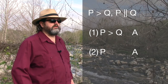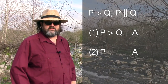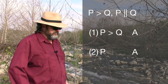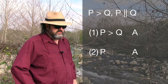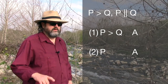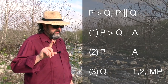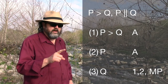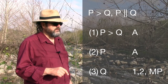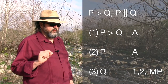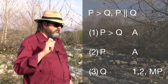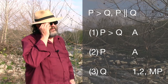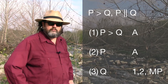The next step is inferring q from our first two premises, and this brings us to rule 13. Rule 13 says that in our citation we first provide the line numbers from which we made that inference — in this case, one comma two comma — then a space, and then the rule we're using. In this case it's modus ponens, which we abbreviate as MP.